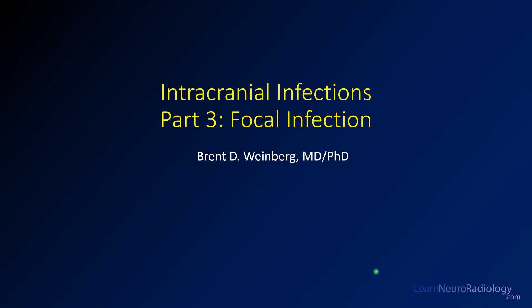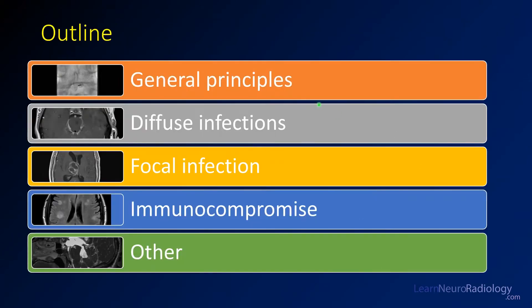Hello everyone and welcome to Learn Neuroradiology. Today we're going to talk more about focal infections in our continuing series on intracranial infections. We've already talked about general principles including diffuse infections such as encephalitis and ventriculitis. Now we're going to talk about what happens when those infections get more focal or loculated. Subsequent videos will cover special considerations for immunocompromised patients.